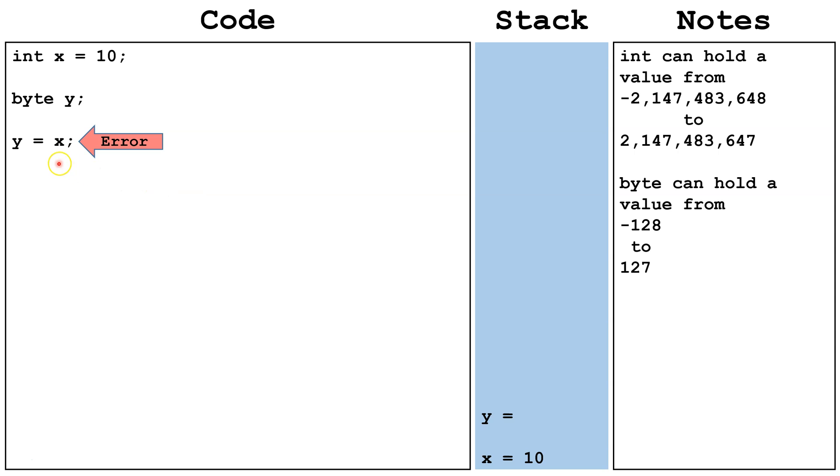Therefore, we need to manually cast the int x as a byte, and then we can set y equal to it. In this case, y equals 10. There's no need for any loss of data. In this example, we're casting the number 128 as a byte.